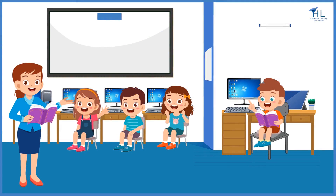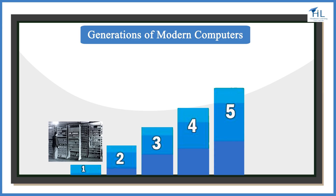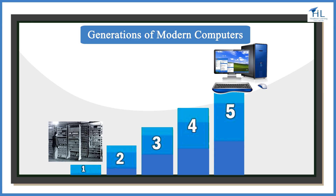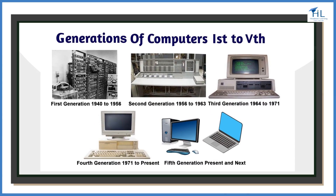Today we will talk about generations of modern computers, that is, computers invented in the 20th and 21st centuries. The computer has evolved from a large-sized simple calculating machine to a smaller but much more powerful machine. We often refer to the advancements of modern computers as the generation of computers. Each generation is designed based on a new technological development, resulting in better, cheaper, and smaller computers that are more powerful, faster, and efficient than their predecessors. Currently there are five generations of computers.